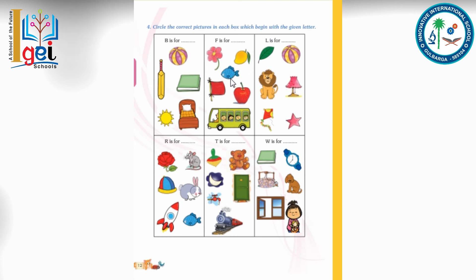Then comes F — F for fish, F for flower, F for flag. By using all these examples you have to complete the remaining letters: L, R, T, and W. This is your homework for today. Our first chapter lesson is completed, so we'll meet in the next class. Thank you, children!